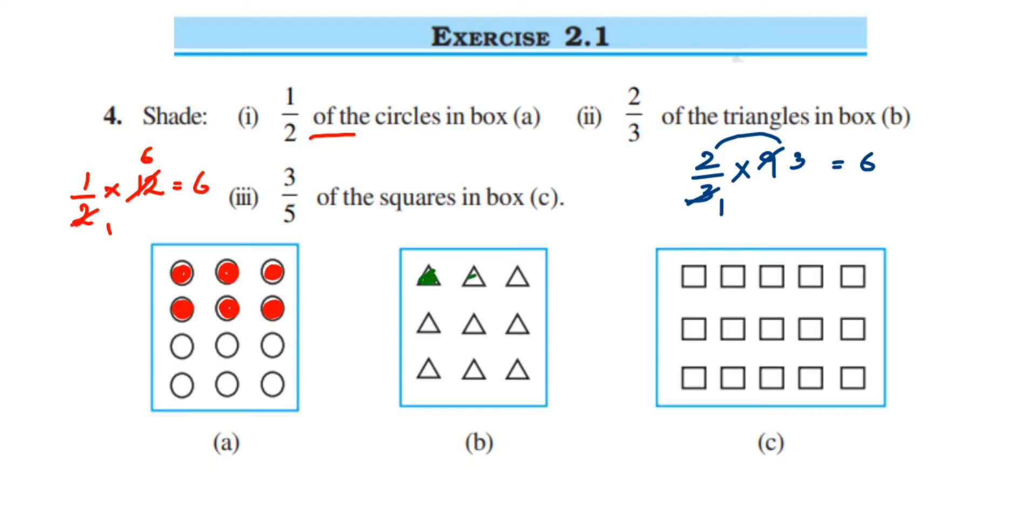You can just randomly pick them. So one, two, this is three. You can just shade them. It's not necessary you have to do them in a sequence. You can do any 6 triangles.